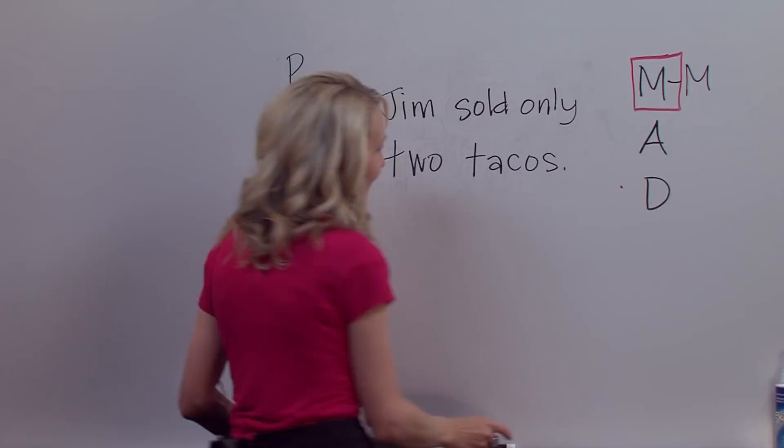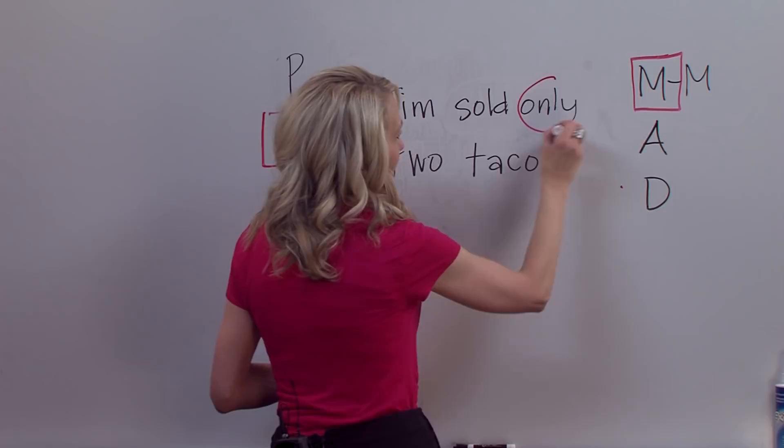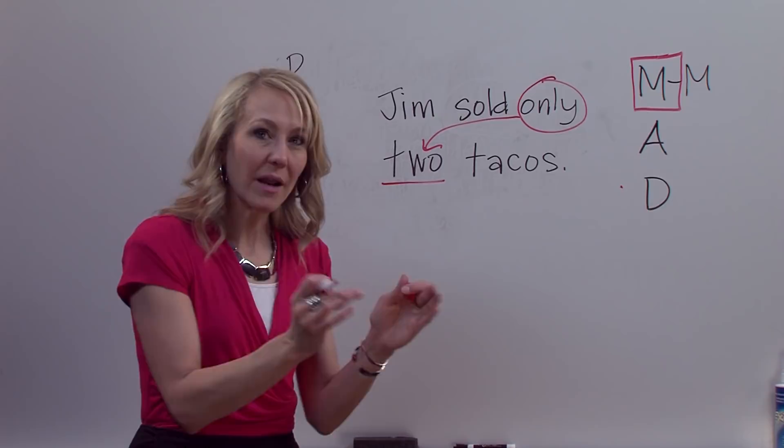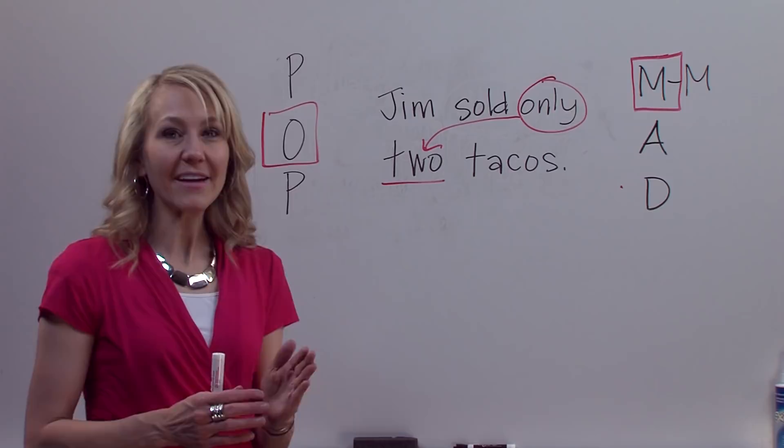Now my sentence is saying what I want it to say. Jim sold — I'll circle the word only and remember it modifies exactly the word that comes after it — only two tacos, instead of ten. That is what I'm trying to say. Now let's talk about our final modifier type that sometimes makes our sentences not clear and correct.